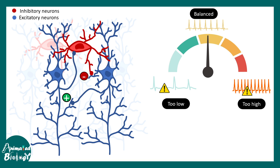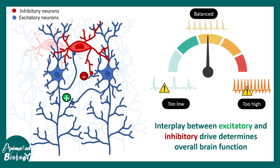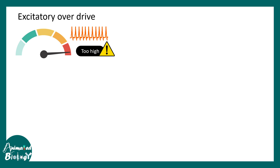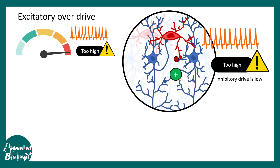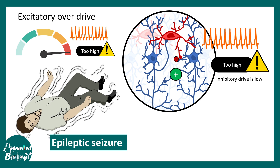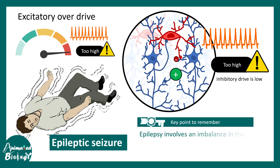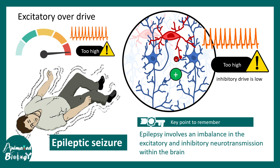In general, excitatory-inhibitory balance is maintained in a circuit. However, this balance is disrupted in many brain disorders including neurodevelopmental disorders like Rett syndrome, autism, Fragile X, and Angelman syndrome. The common problem in all of them is disruption of excitatory-inhibitory balance in the neuronal circuit. Often there is excitatory overdrive with reduced inhibitory drive, which can lead to epileptic seizures.